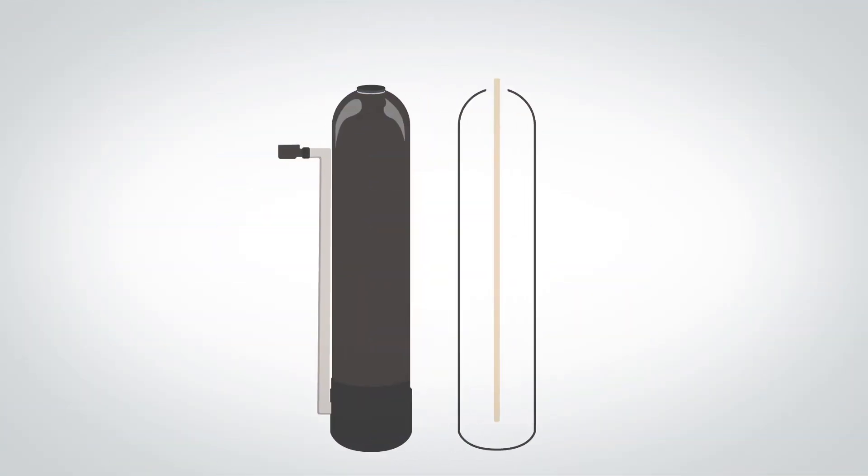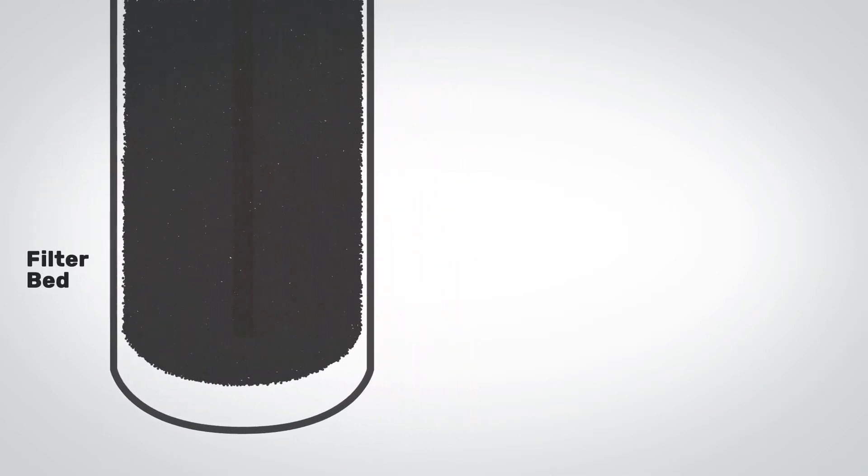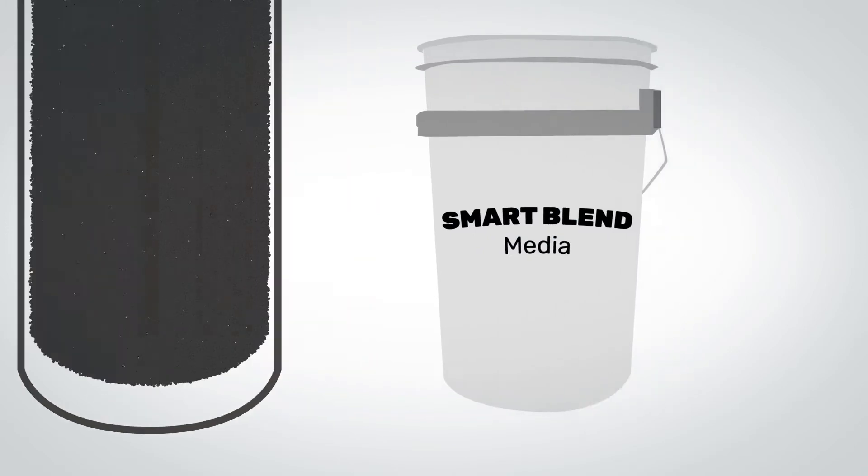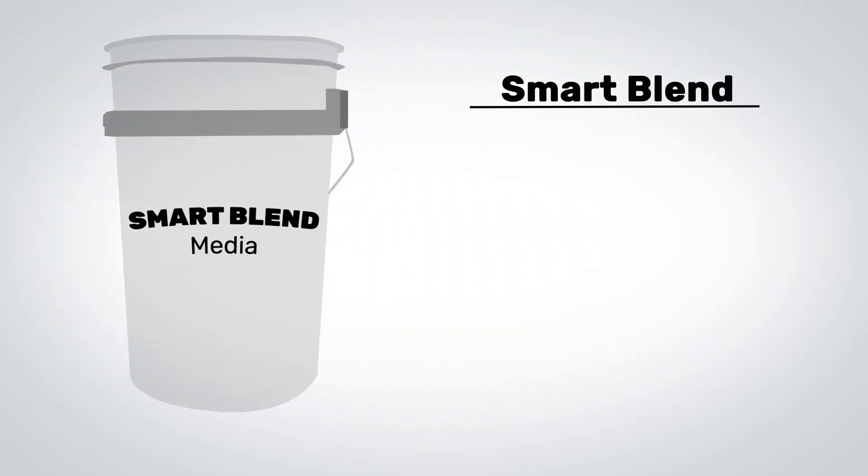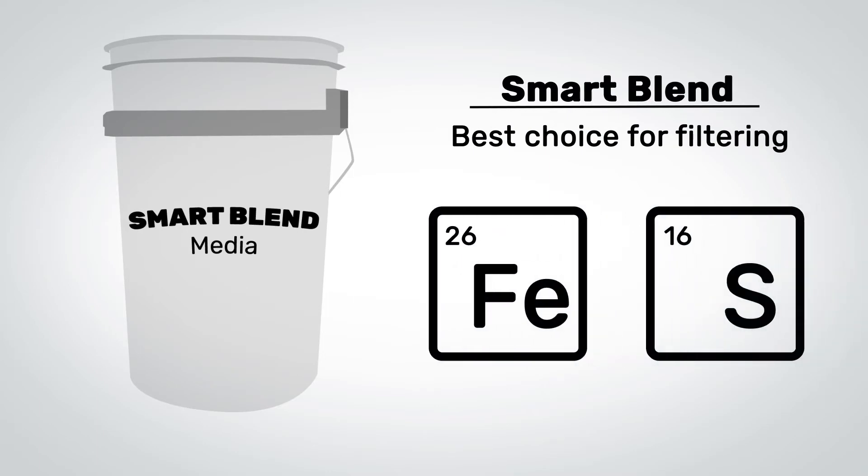Our single tank aeration filter uses a fiberglass tank with a riser tube going up through the middle of the tank and a filter bed located in the lower two-thirds of the tank. The filter bed is made of a granular substance referred to as media. The media typically used in our aeration filter is smart blend, which is the best choice for filtering iron or a combination of iron and sulfur, though other types of media may be used in certain situations depending on your water quality.